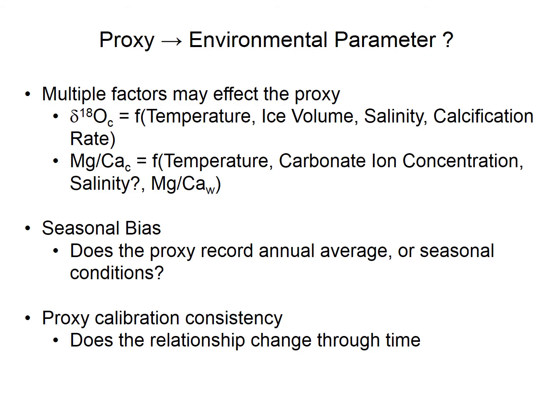Moving on to chemistry. There are things like oxygen isotopes and the magnesium-calcium ratio. If we find shells like those just shown, we dissolve them and measure their isotopic and chemical composition. We can do the same kind of proxy calibration, and these measurements end up being proxies for things like temperature, how much ice there is on the planet, the salinity of the water, and all kinds of different environmental parameters.